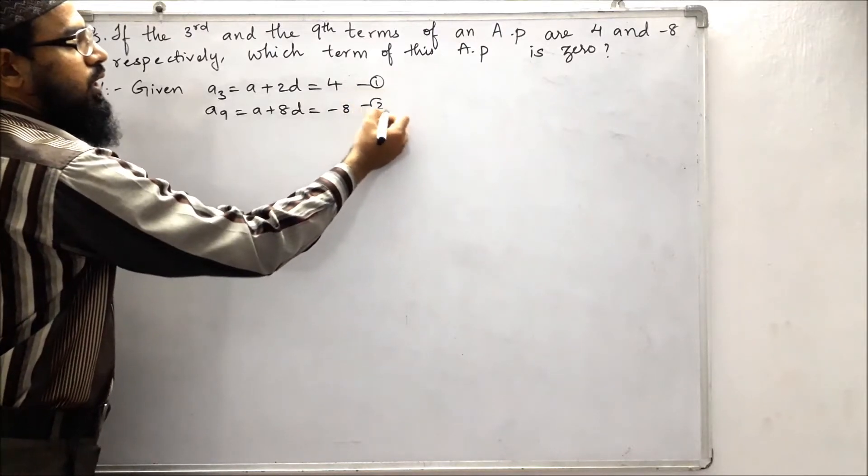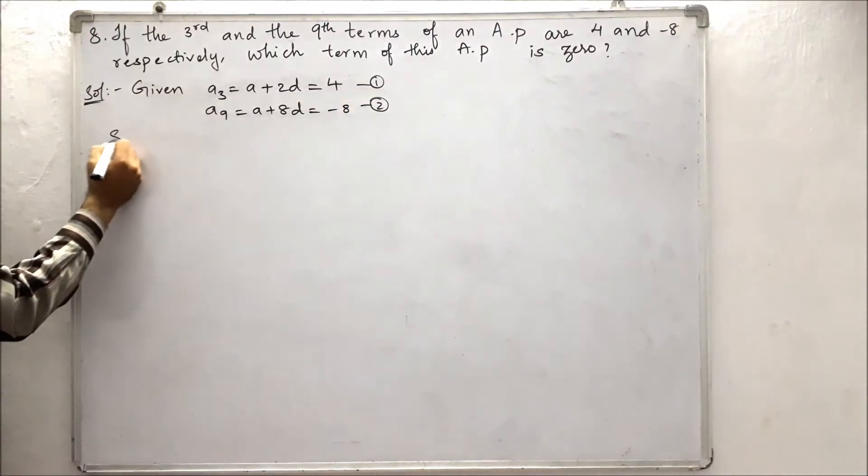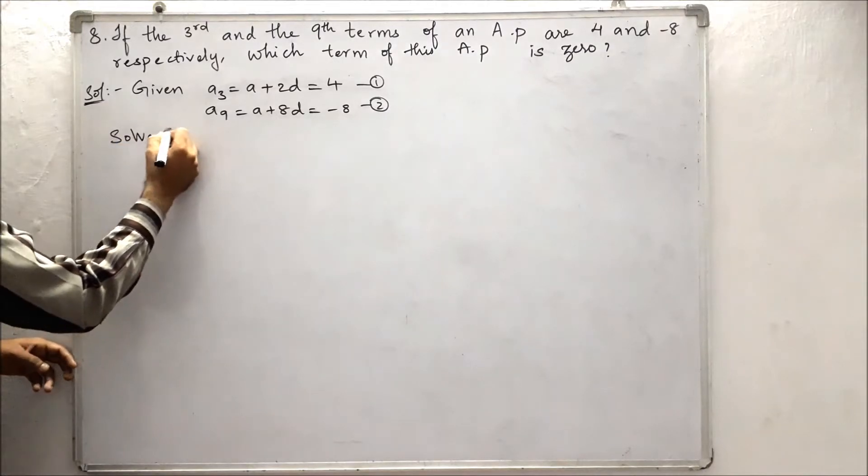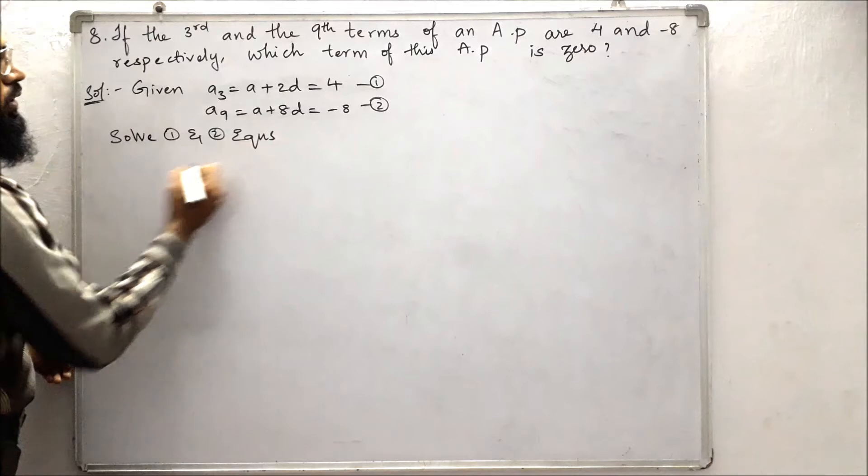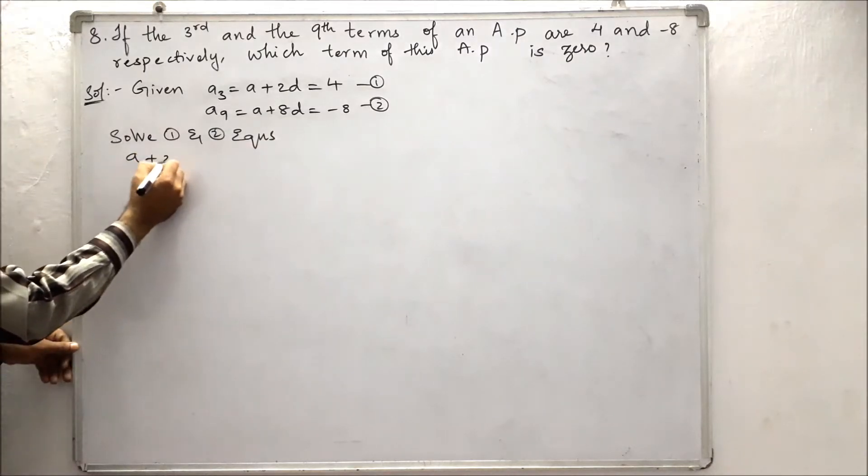Now we will solve the first and second equations. So we get a plus 2d is equals to 4, a plus 8d is equals to minus 8.